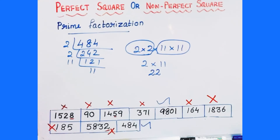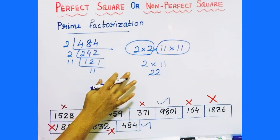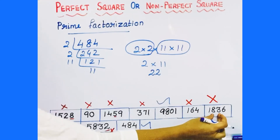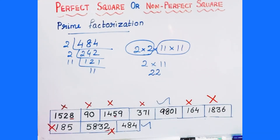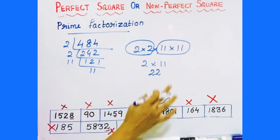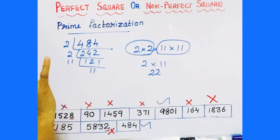So to check whether a number is perfect or non-perfect: you can tell it is a non-perfect number using those four tests. But if you want to confirm it is a perfect square, do prime factorization. Because sometimes the four tests alone will not tell you it is perfect — prime factorization helps confirm whether a number is a perfect square.